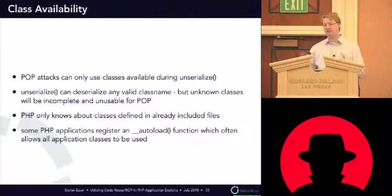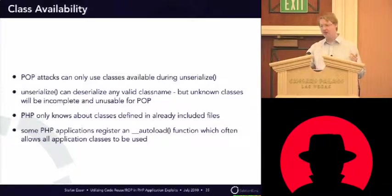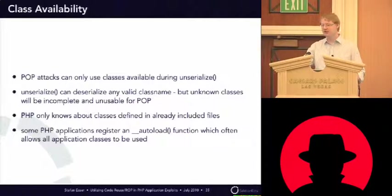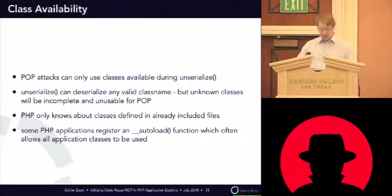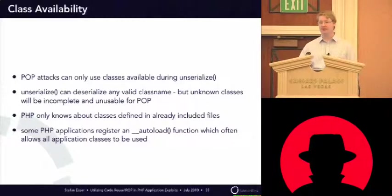This limits very much the amount of classes you can use for the attack. On the other hand, modern PHP applications have the possibility to register a so-called autoload function — a class autoloader. In the case PHP doesn't find the object, it will first call the autoloader, and the autoloader can check if it knows how to load or create the class. So in modern applications you are sometimes able to instantiate every single object of the application because the autoloader will just load the right object at the right time.